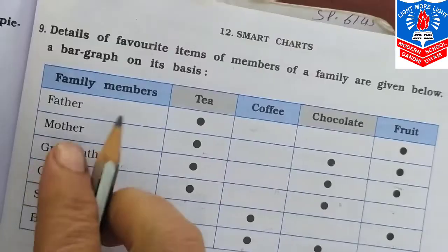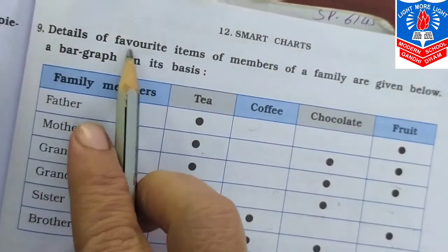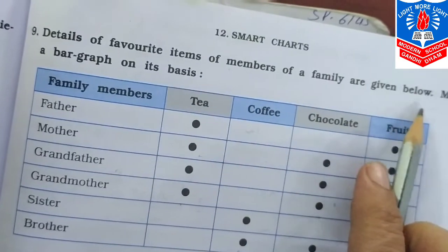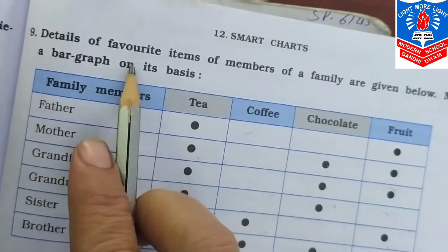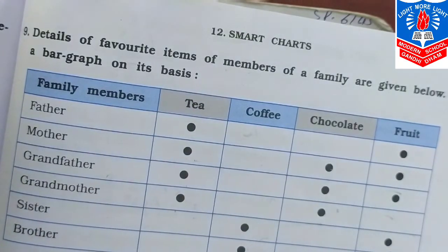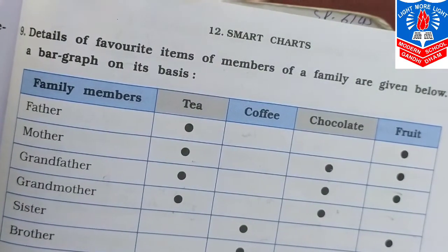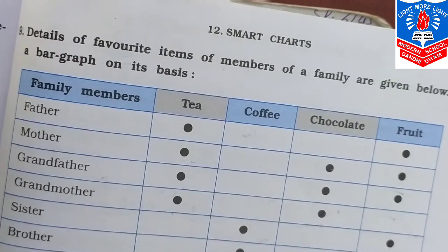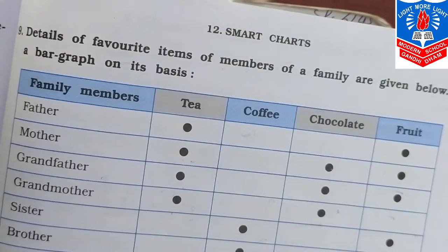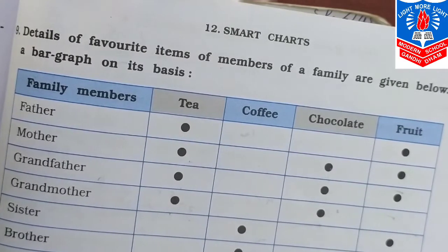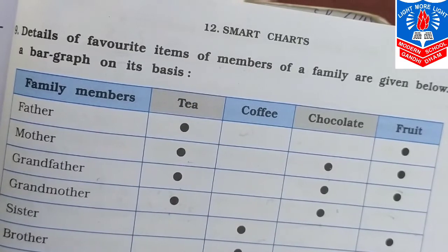Question number 9. Detail of favorite items of members of a family are given below. Make a bar graph. In question number 8, the bar graph was already given and we answered questions based on it. But in question number 9, we will draw the bar graph ourselves.